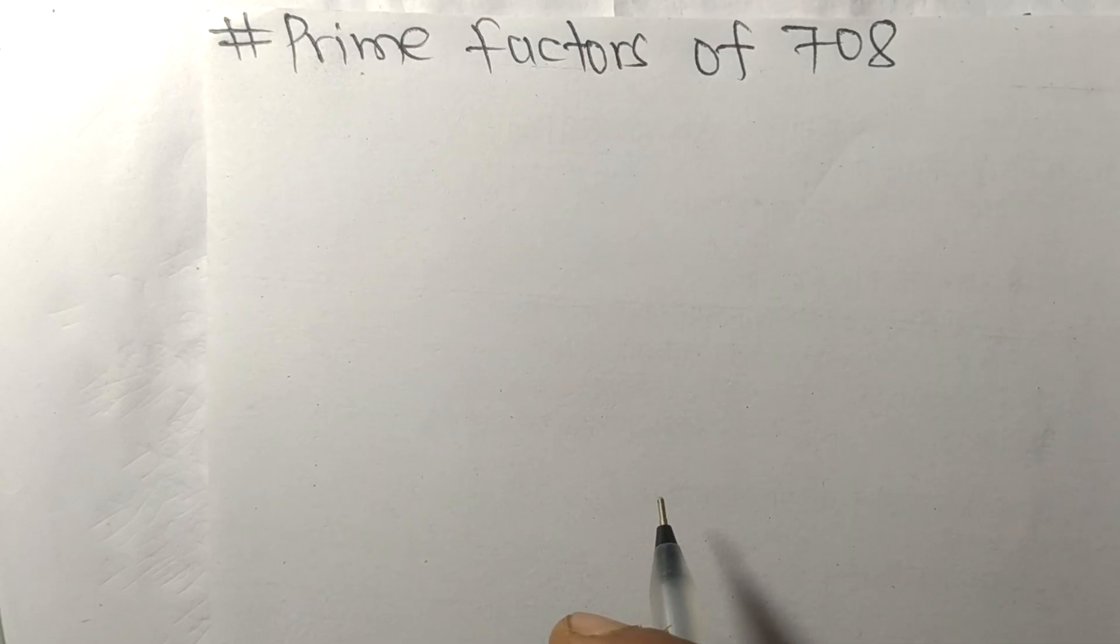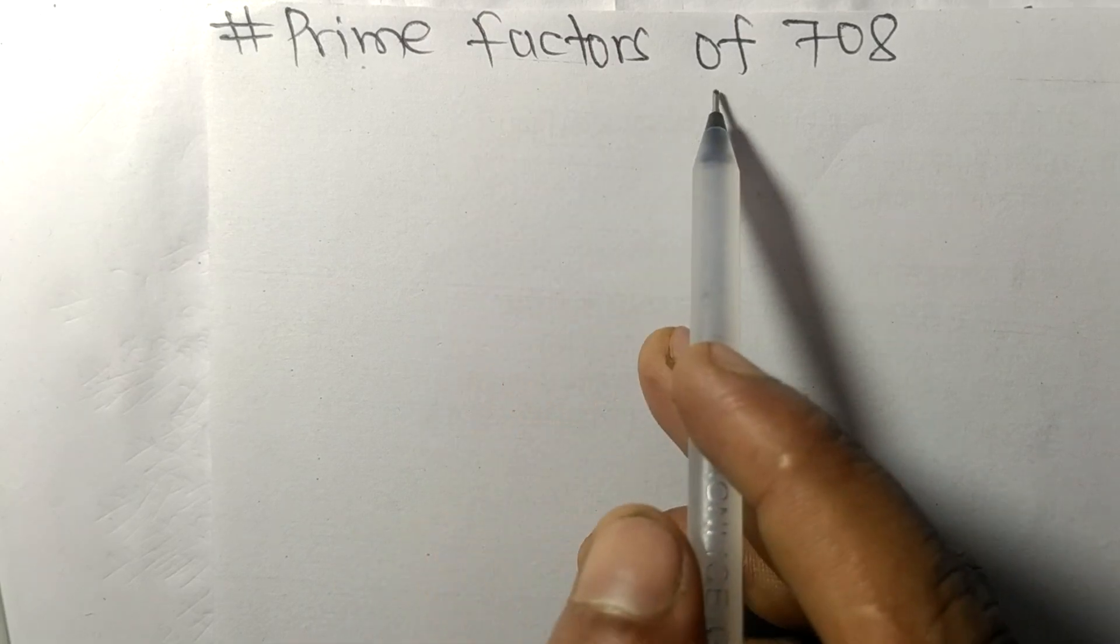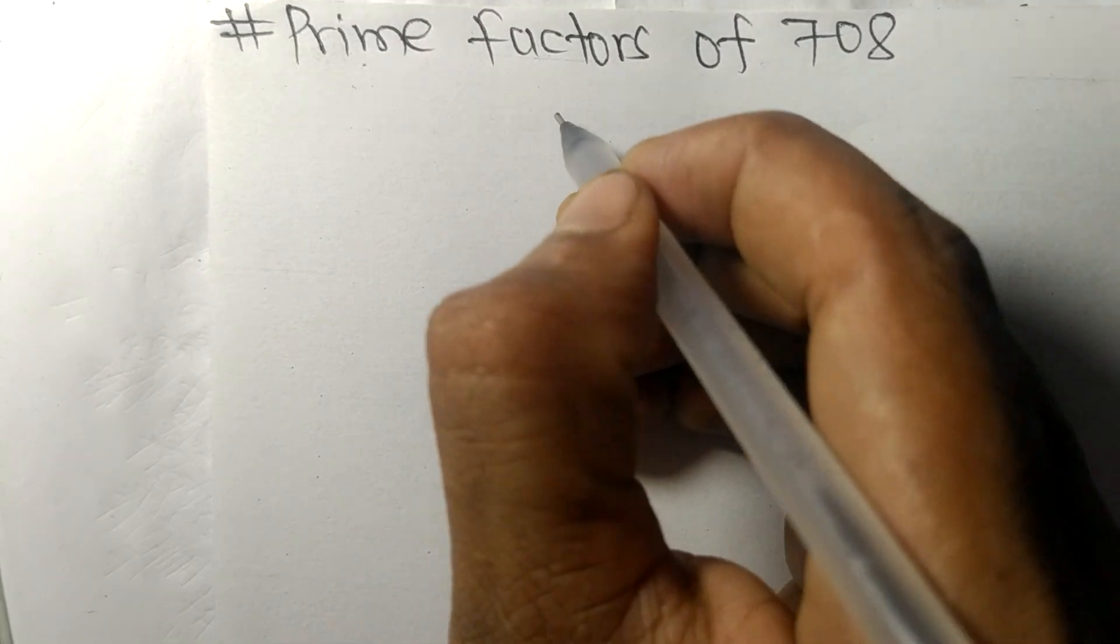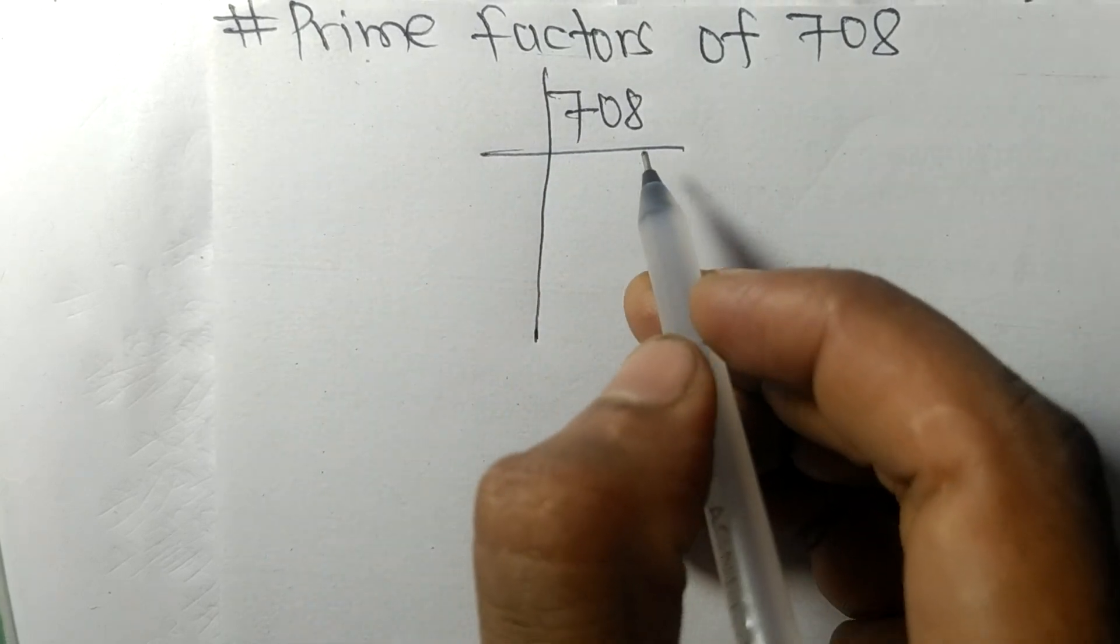Today in this video we shall learn to find the prime factors of 708. 708 contains even number 8 at the last, so it is divisible by 2.